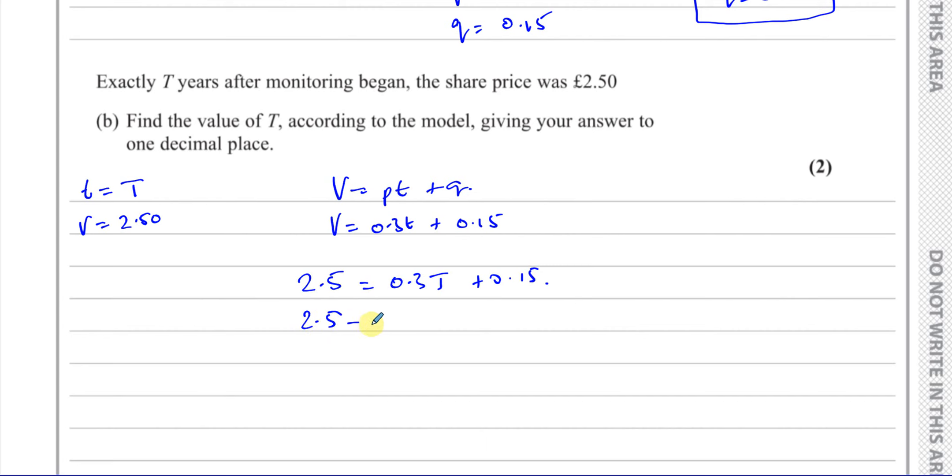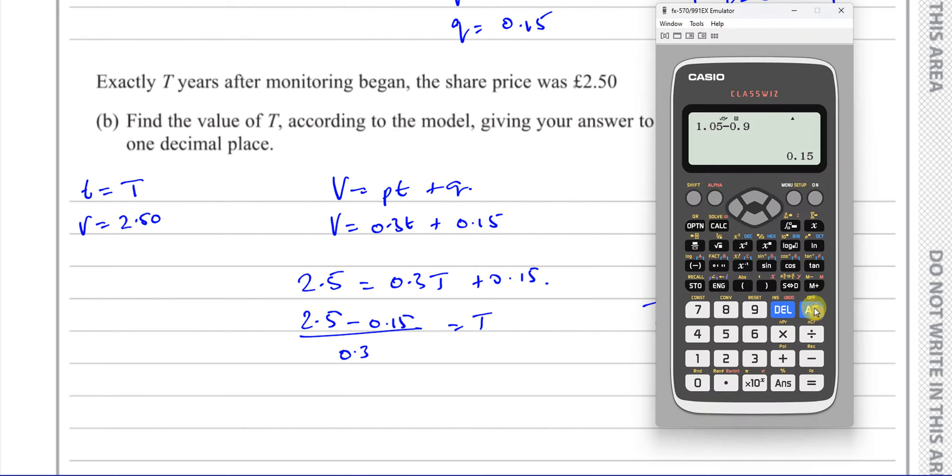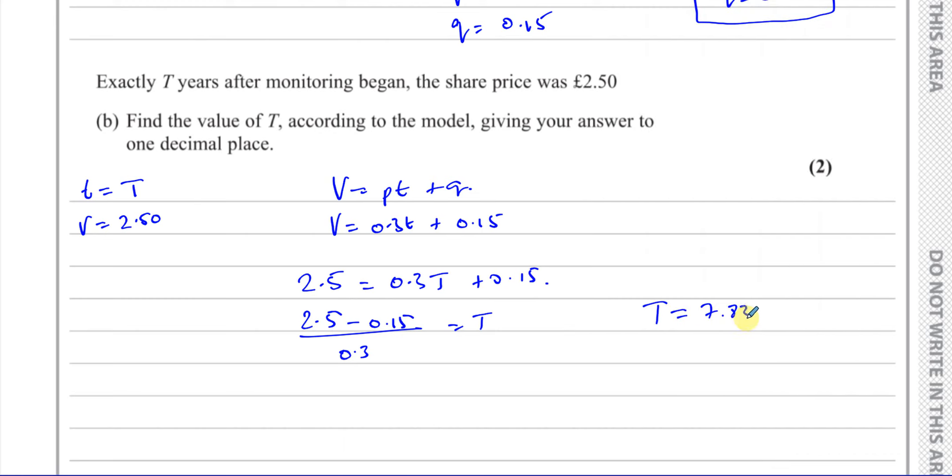So you have 2.5 minus 0.15 divided by 0.3, and that's what T is. So T equals 2.5 minus 0.15 divided by 0.3. And that gives you, to one decimal place, the value of T is going to be 7.83 recurring, 7.8333. They want the answer to one decimal place, so that's going to be 7.8.